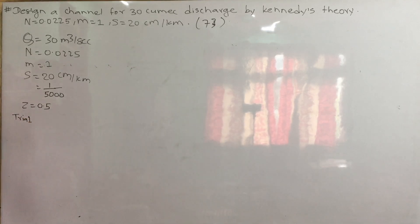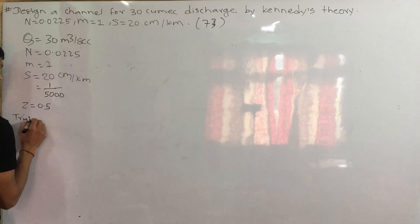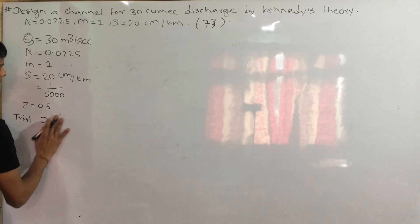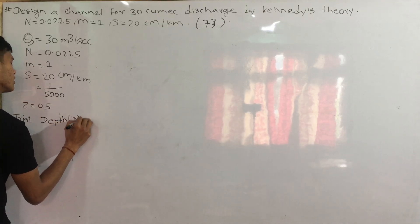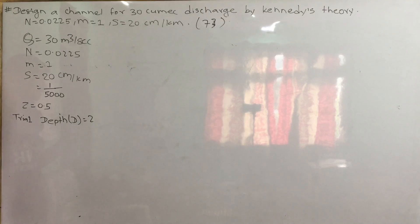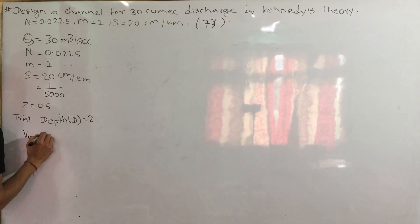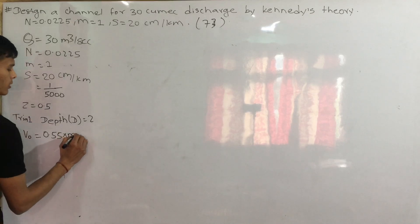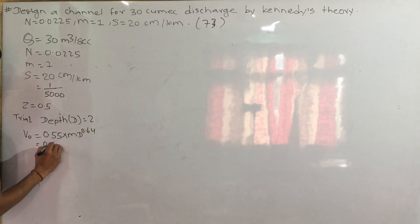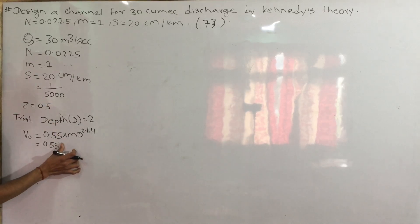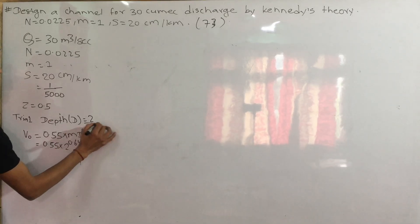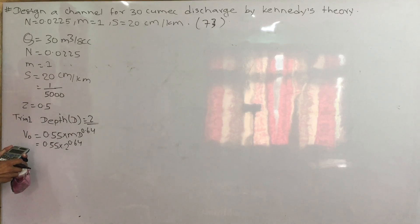I will try to make it — Trial 1 — with depth equal to 2 m. The critical velocity formula: 0.55 into m, with depth to the power 0.6. So: 0.55 × m × D^0.6.